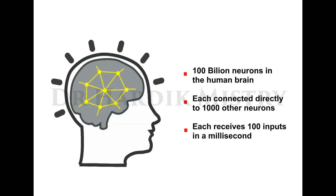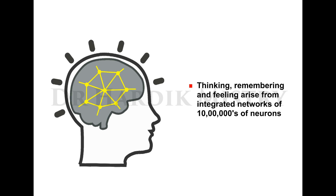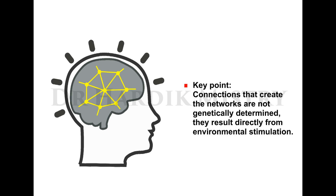There are 100 billion neurons in the human brain, each connected directly to 1000 other neurons, and each neuron receives 100 inputs in a millisecond. Thinking, remembering, and feeling arise from integrated networks of millions of neurons. The key point is that connections that create these networks are not genetically determined — they result directly from environmental stimulation.